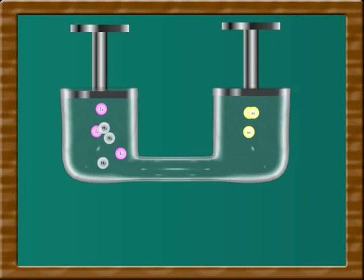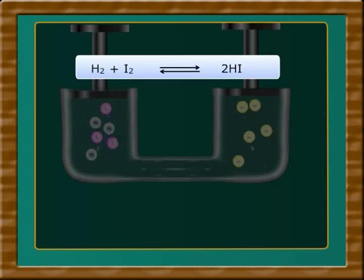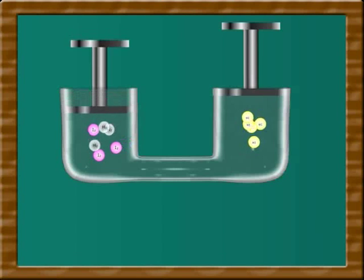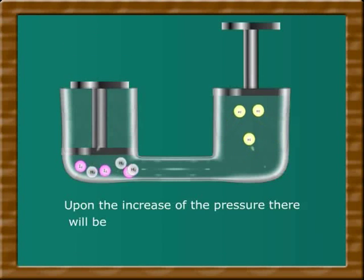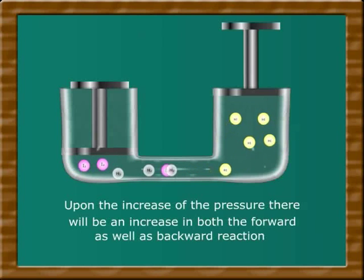In the reaction between hydrogen and iodine to form hydrogen iodide, there is no net increase or net decrease in the number of molecules of reactants and products. Upon the increase of the pressure, there will be an increase in both the forward as well as backward reaction.